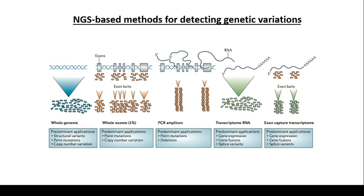Then there is whole exome sequencing, which is clearly different from whole genome sequencing. Whole exome only covers point mutations and copy number variations in exomic regions — that is only about one percent of the whole genome, specifically the coding part. Researchers focusing on how mutations disrupt the coding genome may not have interest in intronic parts or gene deserts. This is why exome sequencing is a focused application generating those two types of data.